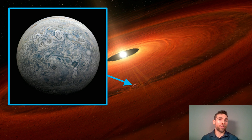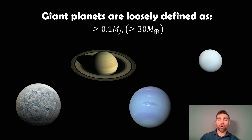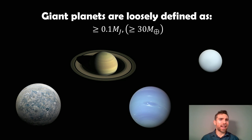What are giant planets? Quite loosely they can be defined as having a mass greater than 0.1 times the mass of Jupiter, or 30 times the mass of the Earth. Now there are four large planets in our solar system, but really only two are known as more classic giant planets: Jupiter and Saturn. Uranus and Neptune are more ice giants, and their formation is actually a little bit different.